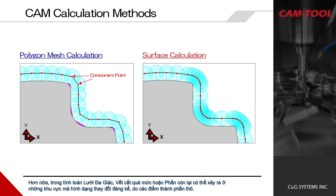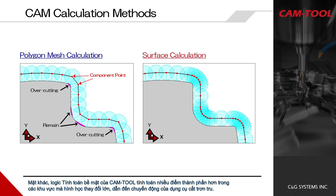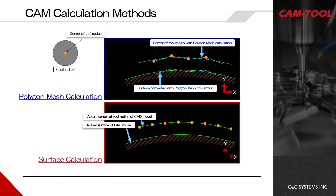Furthermore, in polygon mesh calculation, over-cuttings or remains can occur in areas where the shape changes significantly, due to rough component points. On the other hand, CamTool's surface calculation logic calculates more component points in areas where the geometry changes significantly, which leads to smooth cutting tool motion.